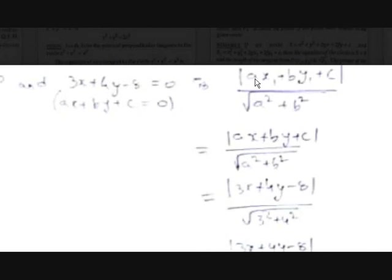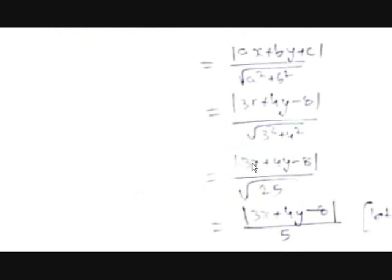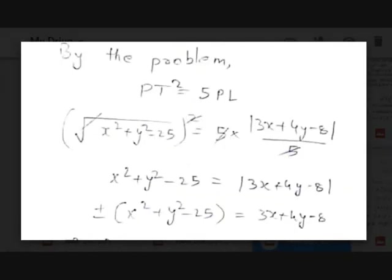The perpendicular distance from the point to the line is |ax+by+c|/√(a²+b²). Here a=3, b=4, c=−8, so the distance PL = |3x+4y−8|/√(9+16) = |3x+4y−8|/5.